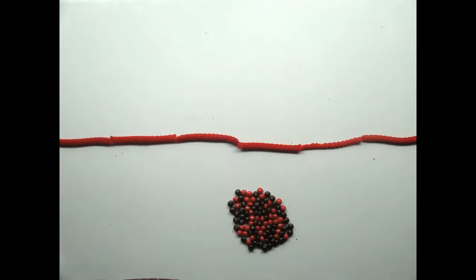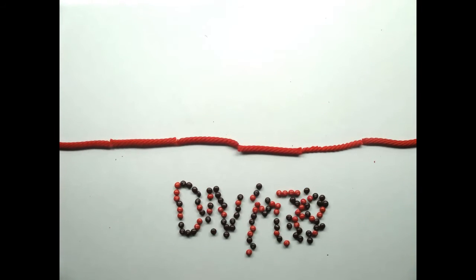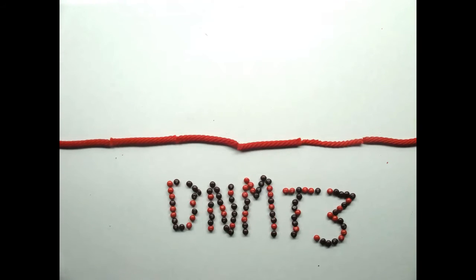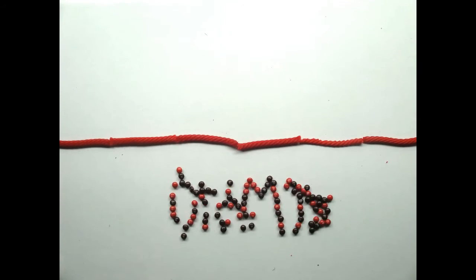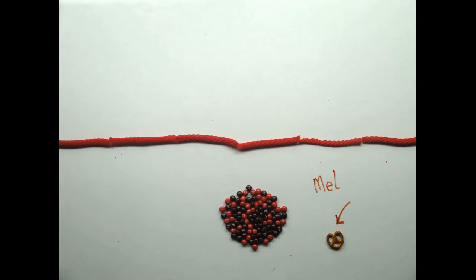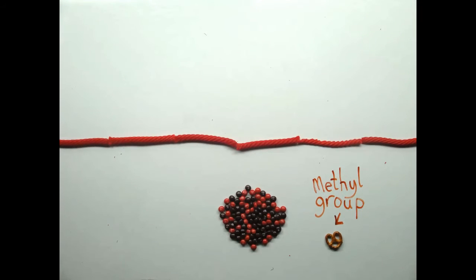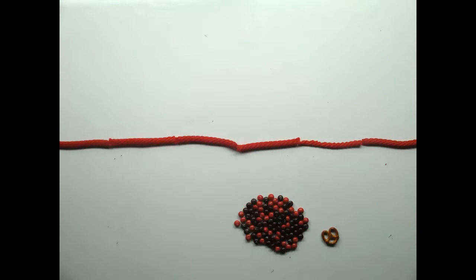The enzymes that catalyze these reactions are called DNA methyltransferases, or DNMTs. Specifically, the original methylation is put on by DNMT3. For simplicity's sake, we're just going to show the methyls without the enzymes bringing them in from here on out.